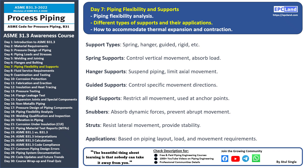Spring supports control vertical movement and absorb load, allowing the pipe to move up and down while maintaining support. Hanger supports suspend the piping and limit axial movement. They are used in cases where vertical movement needs to be restricted.